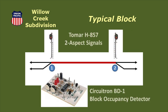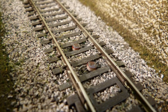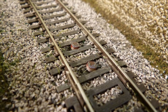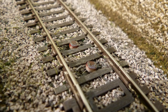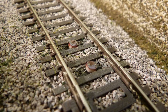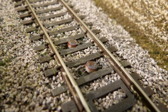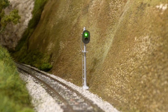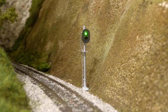TOMAR two-aspect block signals protect each end of the block and are controlled by a Circuitron BD-1 block occupancy detector. The BD-1 uses a pair of optical sensors at each end of the block to detect a train entering or exiting the block, and sets the block signals to either red or green as appropriate.